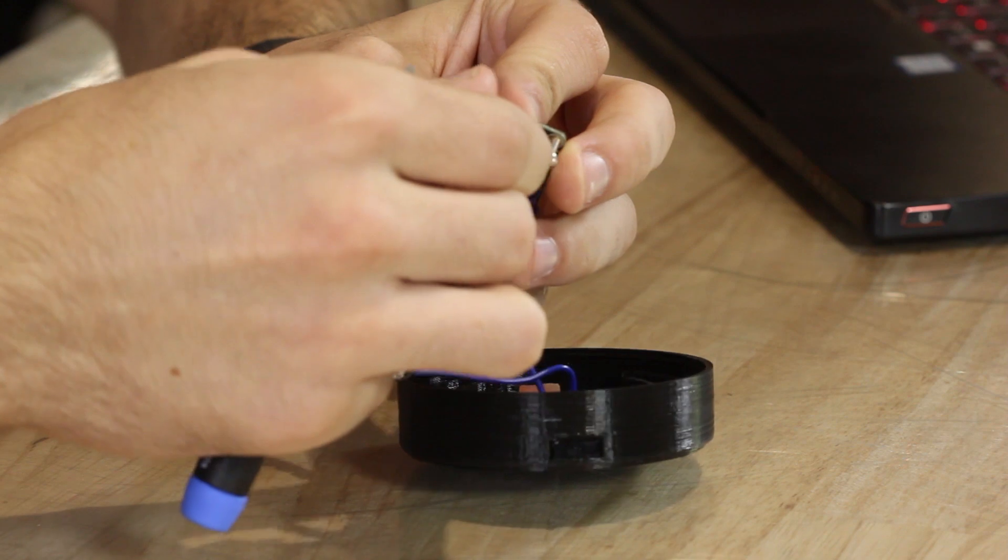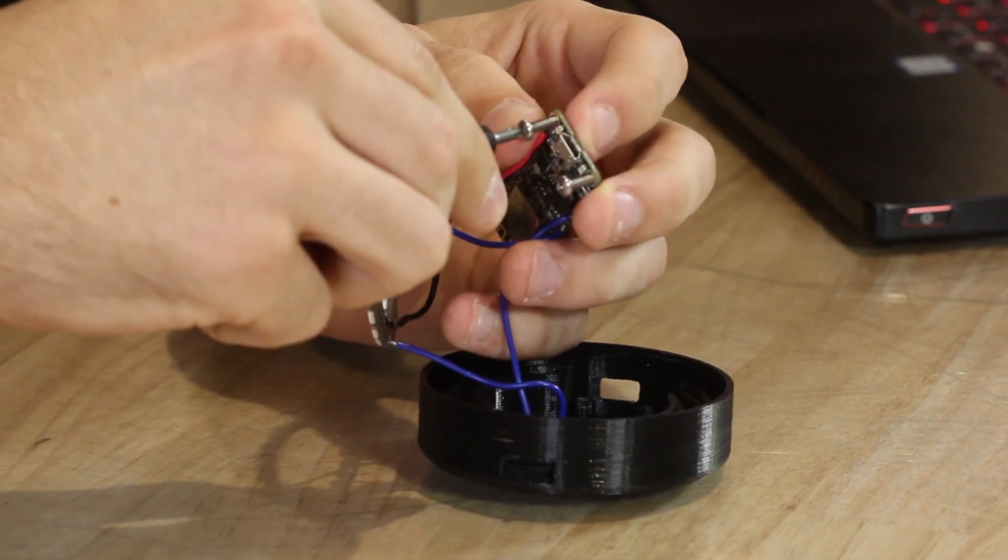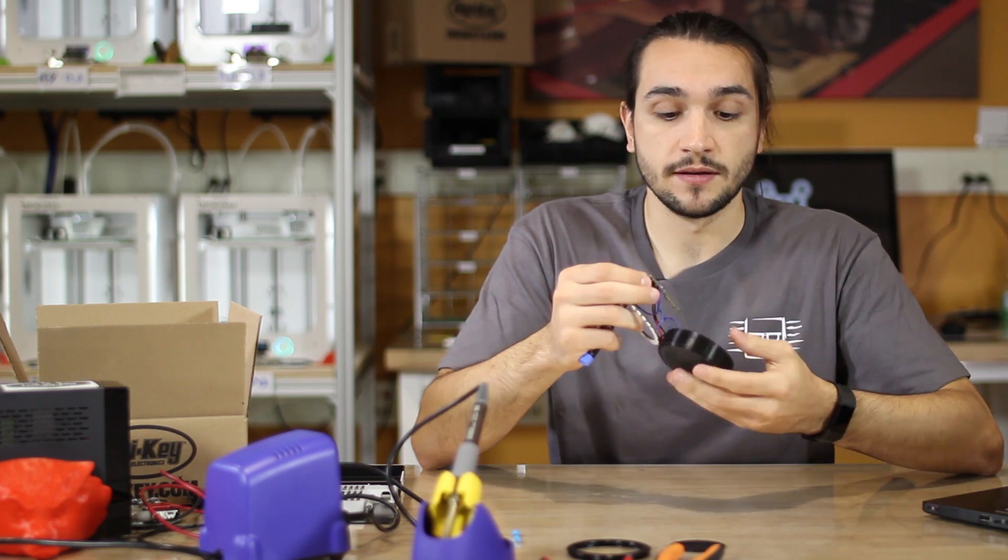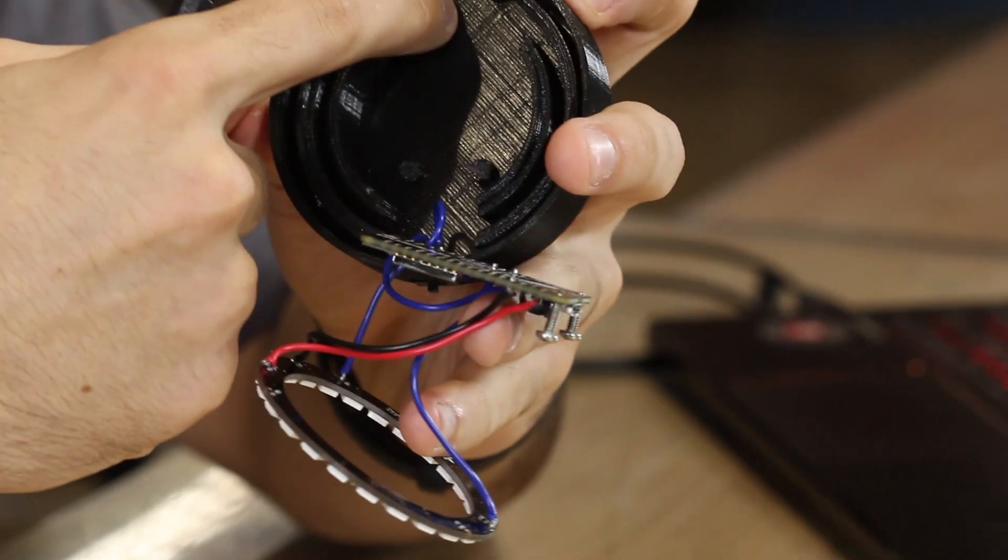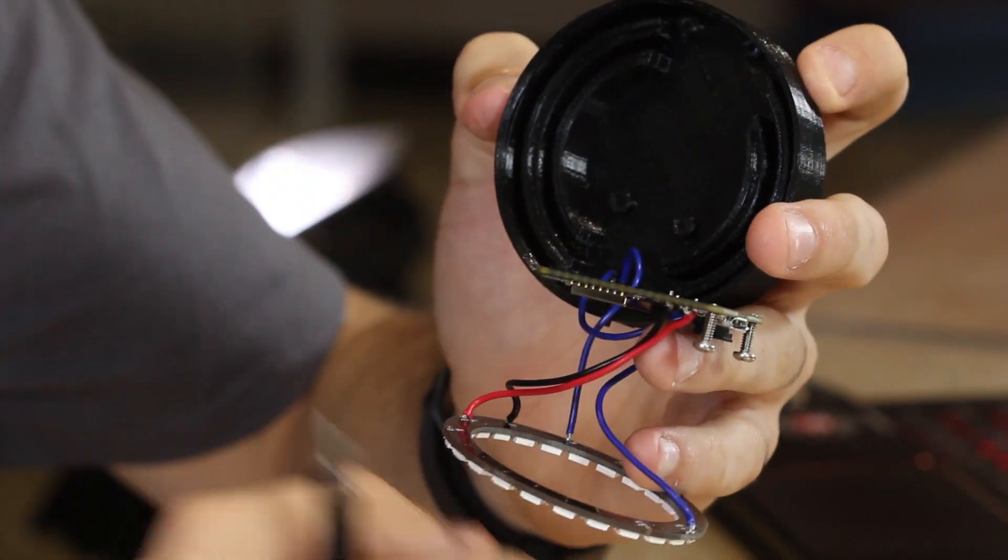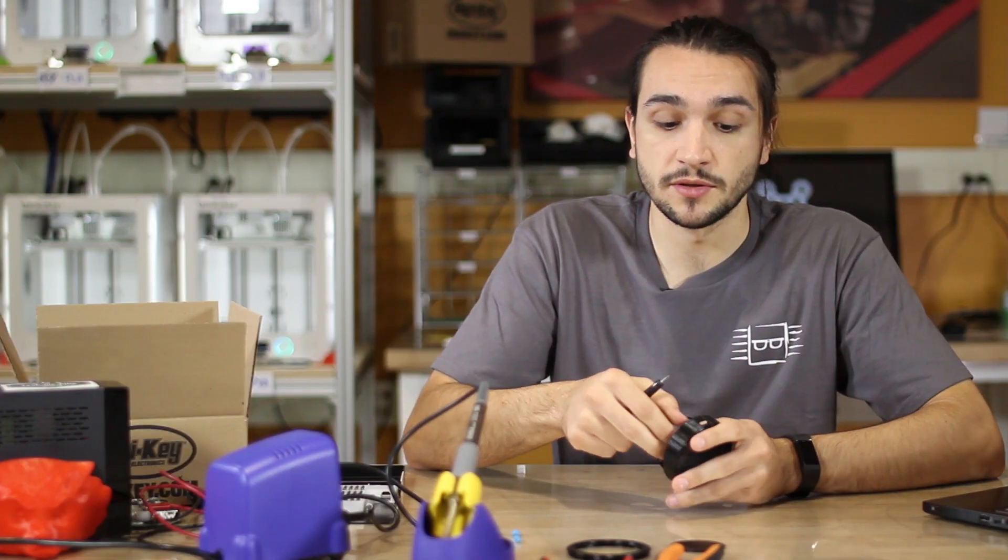You only want to screw them in enough to keep them in there, but not to poke out the other side. Once the screws are in, on the other side is the switch. So in the front of the enclosure, there are two little circles at the bottom. Those are where the screws will go into to hold the feather in place.